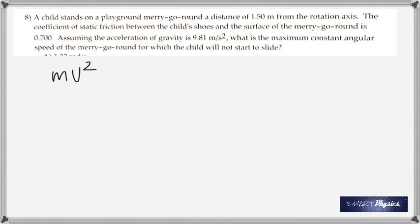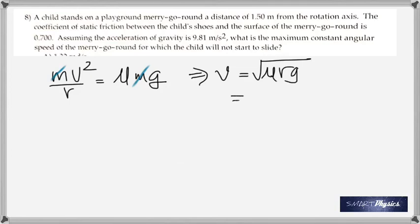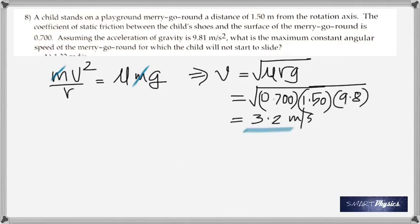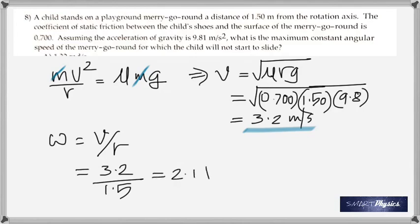Brings us to number 8. A child is standing on a playground merry-go-round a distance of 1.50 m from the rotation axis. The coefficient of static friction is given as 0.7. And you've got to find the maximum constant angular speed. Well, in this case, because it's going round, it's the centripetal force given by mv squared by r, which is balanced by friction, mu mg. Masses get cancelled and find the velocity. Plug in the numbers given there. Radius 1.5, 9.8. Was given as 9.81. So you get approximately 3.2 m per second. And now you've got to find the angular speed. And angular speed is linear speed divided by radius. So 3.2 divided by 1.5. And I had mentioned this in class today. So you get 2.14 radian per second.